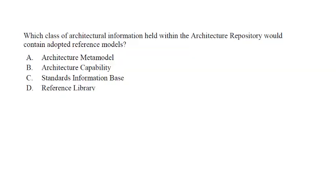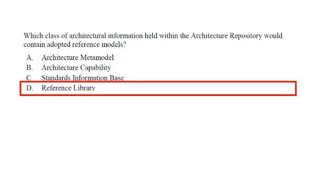Question 9: Which class of architectural information held within the architecture repository would contain adopted reference models? Options: A) architecture meta model, B) architecture capability, C) standard information base, D) reference library. The correct answer is option D — reference library, which contains adopted reference models.